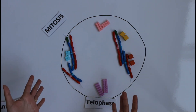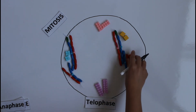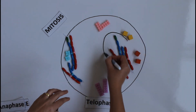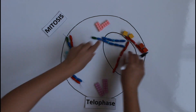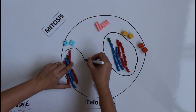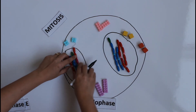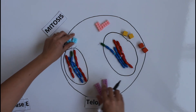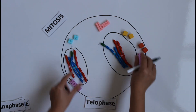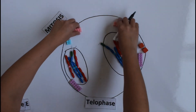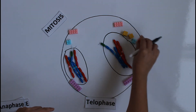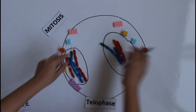After anaphase comes telophase, which is the opposite of prophase. If in prophase the nuclear membrane disappeared, now it appears again — I draw the nuclear membrane back. My DNA decondenses again. All the organelles split in two so each copy goes to one side of the cell, and the substances such as enzymes also split between the two sides.